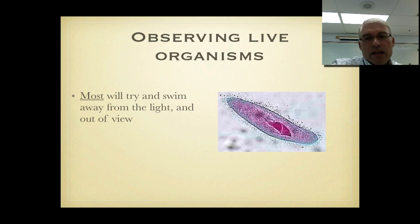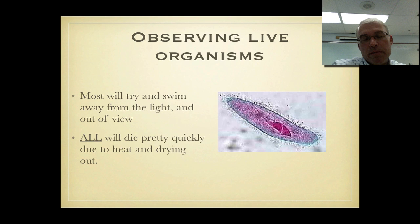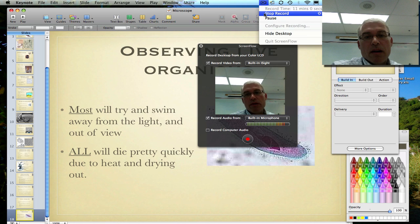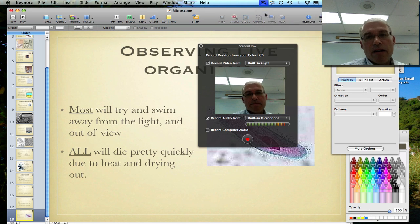When you're observing living organisms like things in pond water they're probably going to be trying to swim away from the light. So they're going to be hard to observe. Some ways around this is to try to get them trapped in some debris or some junk on the slide so they can't swim away. And over time they're all going to eventually die because the bright light is heating up the field of view and you're basically cooking them. So they're not going to last very long. But there's probably always more to look at. That does it. Thank you very much for paying attention and I hope you enjoy using the microscope.